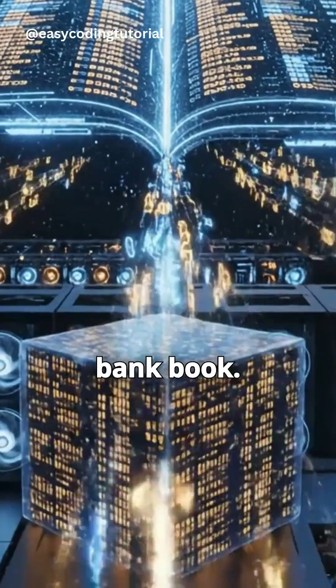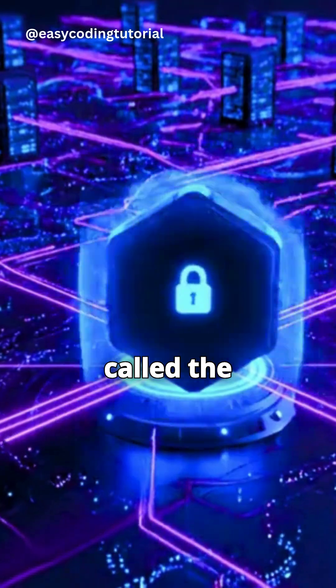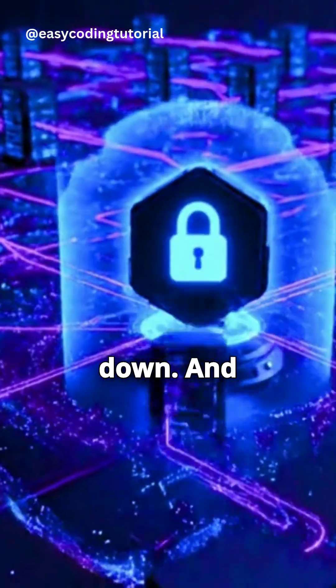What is digital ledger? The bank book. Imagine Bitcoin is one giant shared bank book, called the blockchain. Every single transaction, every time someone sends Bitcoin, needs to be written down and verified.